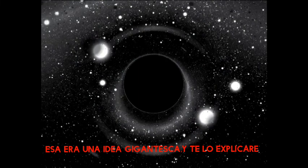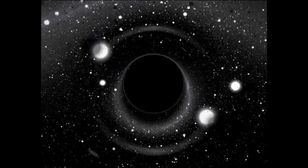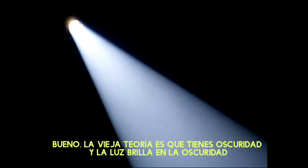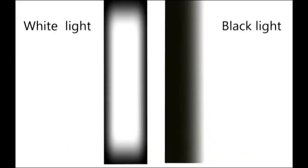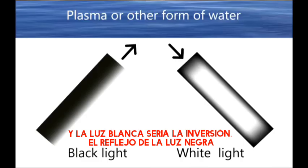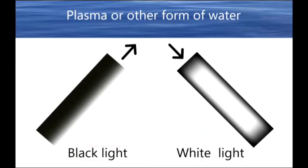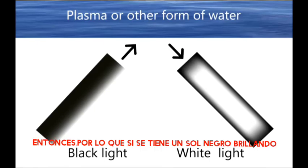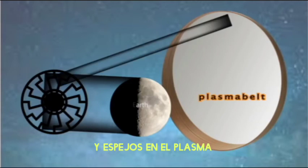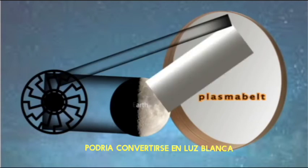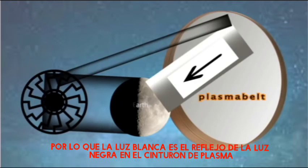That was a gigantic idea, and I will explain it to you. The old theory is: you have darkness and the light is shining in the darkness. What if this theory was wrong? Let's suggest that there is black light and white light, and white light would be the inversion — the reflection — of black light. So if you have a black sun shining and it mirrors in the plasma, it could become white light. White light is the reflection of the black light in the plasma belt.